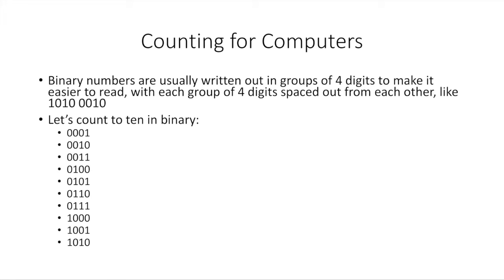Binary numbers are usually written in groups of four to make them easier to read — for example, 1010 0010. Let's count to 10 in binary: 0, 1, 10, 11, 100, 101, 110, 111, 1000, 1001, 1010. So three is 0011, four is 0100, five is 0101, six is 0110, seven is 0111, eight is 1000, nine is 1001, and ten is 1010.